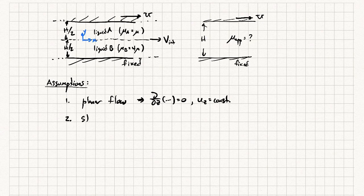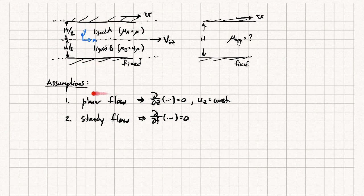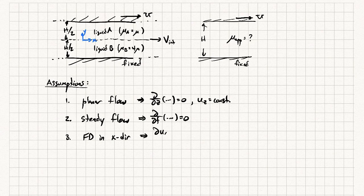Assumption number one is planar flow, meaning we don't have to worry about any changes in the z direction. Assumption number two is steady flow — it's not changing with time, so d/dt of whatever is zero. These assumptions are reasonable: it's planar because there's nothing happening in and out of the page, and it's steady because we're not told anything is varying with time. Assumption number three is fully developed in the x direction, meaning velocities aren't changing in x.